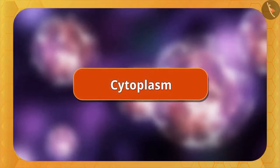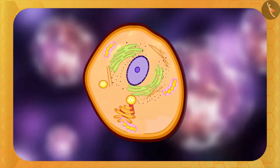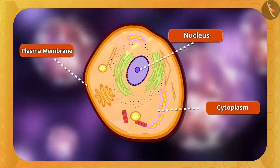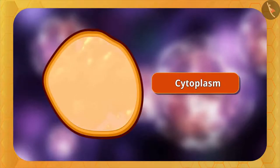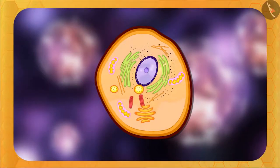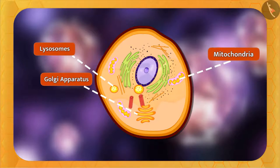Let's understand cytoplasm. The part between the nucleus and the plasma membrane in the cell is called the cytoplasm — it is a jelly-like fluid. Because of its jelly-like nature, all cell organelles like mitochondria, Golgi apparatus, lysosomes, etc. float in it, and the required proteins of these cell organelles swim through the cytoplasm to reach them. Apart from this, it maintains the texture of the cell, and all chemical reactions responsible for cell survival also take place in the cytoplasm.